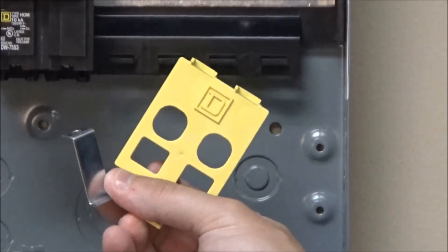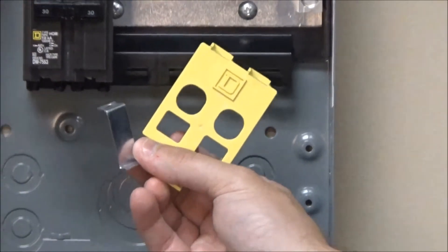With this kit, you will receive the yellow service entrance barrier, the hold down bracket, and two mounting screws.